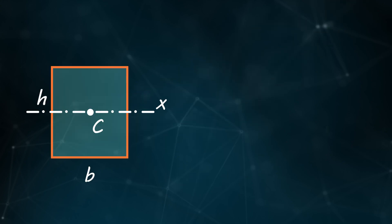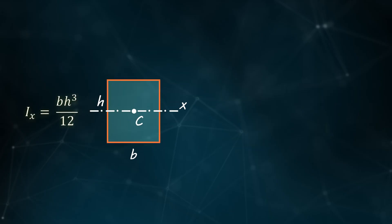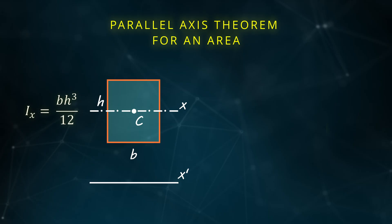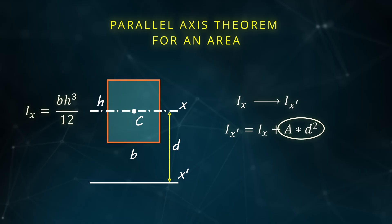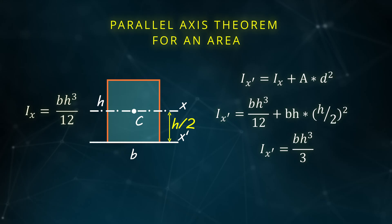Setting up the integral for a rectangular cross-section confirms the area moment of inertia about the centroidal horizontal axis is bh³/12. To calculate it about another parallel axis, we use the parallel axis theorem — no need to set up integrals again. We multiply the area by the square of the distance between the two axes and add it to the centroidal moment of inertia. This gives the moment about the axis through the base as bh³/3.